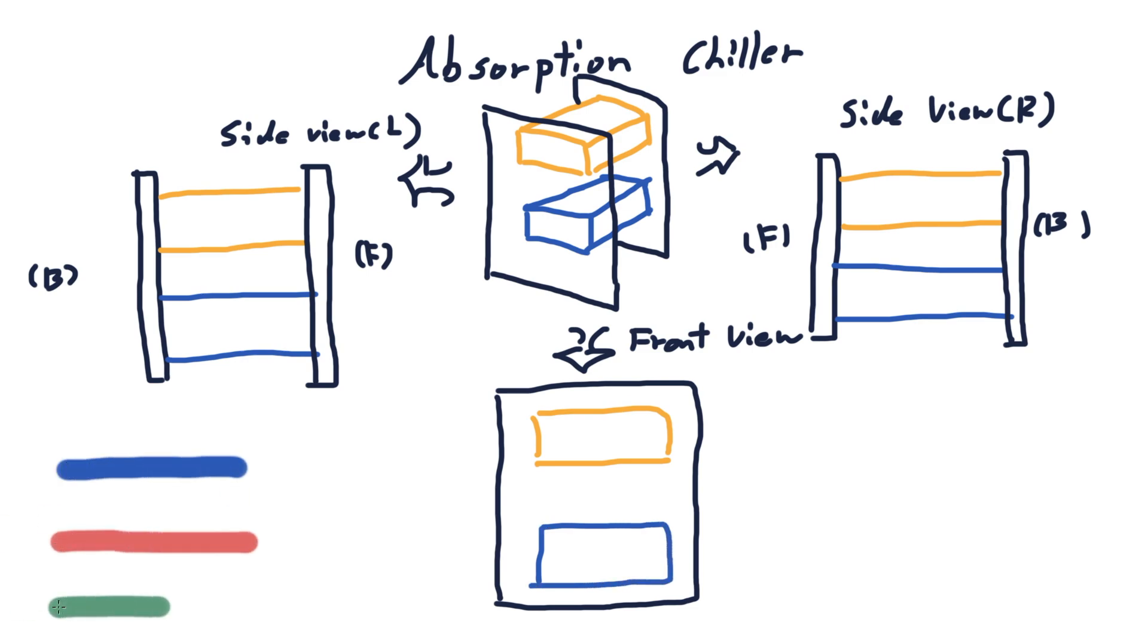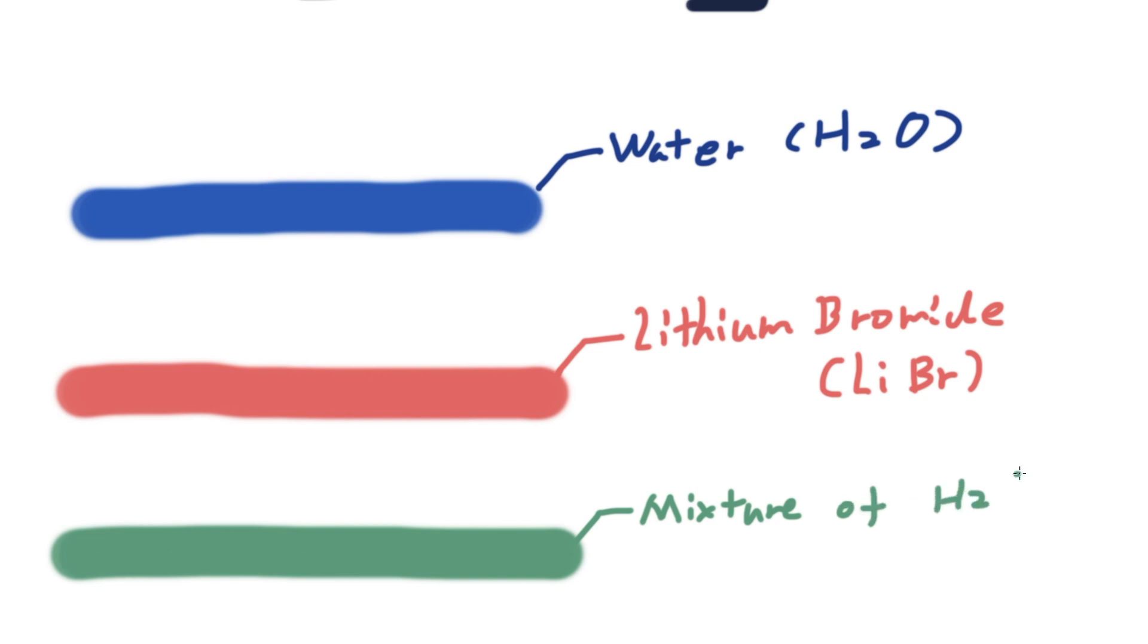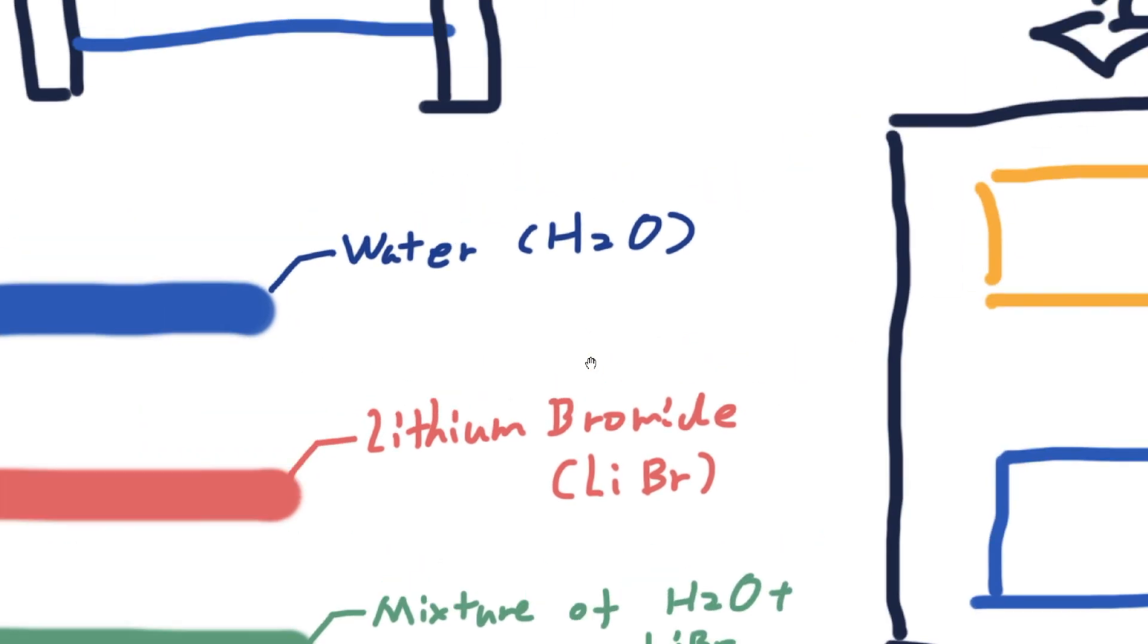Three different types of thermal fluid are used in this machine. The first is water or H2O, and the second is lithium bromide. This liquid has a very strong attraction against water and has a very high boiling point of more than 1000 degrees Celsius. And the third is the mixture of H2O and lithium bromide.